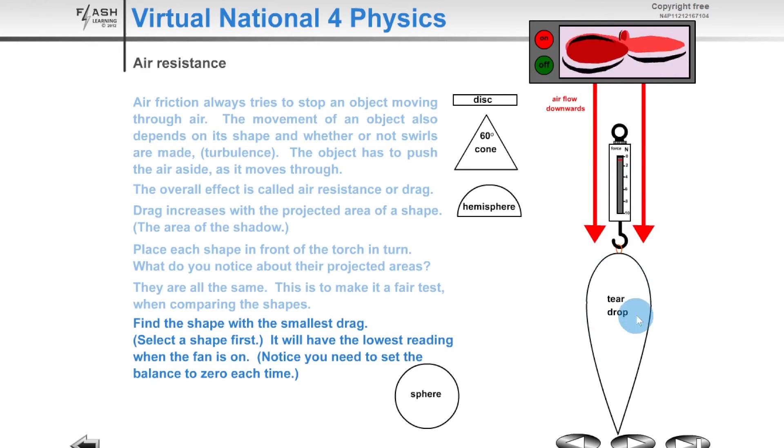So we would say that the teardrop shape is actually the most streamlined, producing the smallest amount of air resistance, because we've got the smallest force on the Newton balance here. That means that the air from the fan is passing very nicely around the shape of the teardrop, rather than colliding head-on with it.